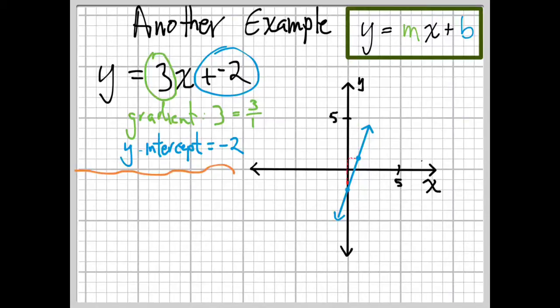One more example. This time, we'll do y equals x plus 4. When we go to do this and we find the gradient and we look, well, there's no number in front of the x. This is just something you need to remember. If there's no number in front of the x, then the number in front is 1.